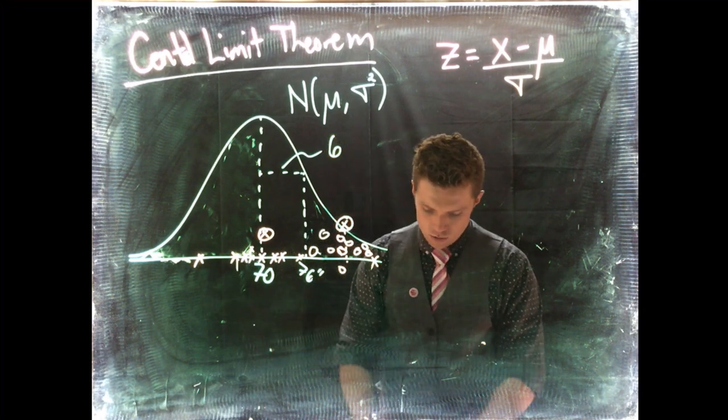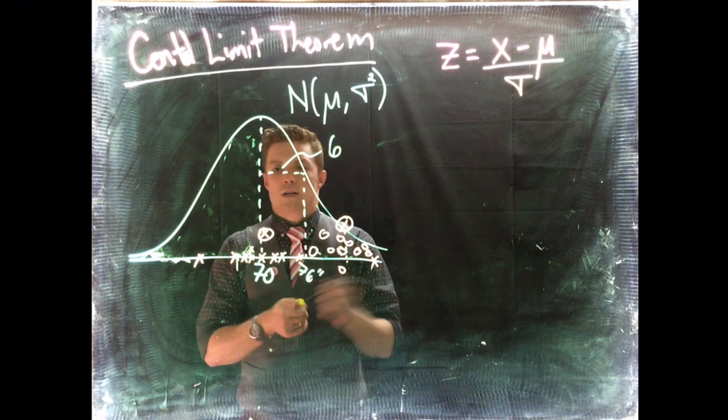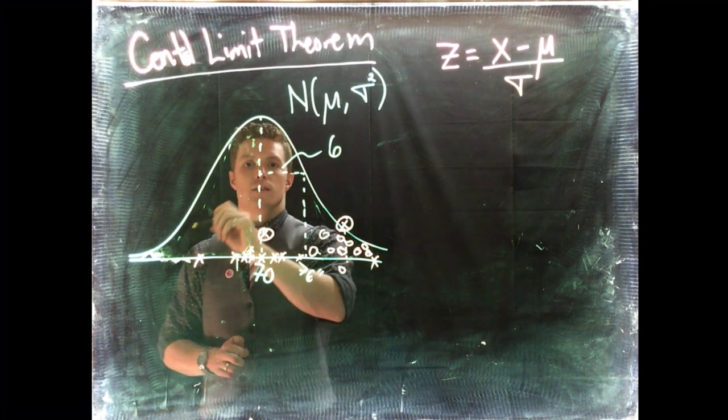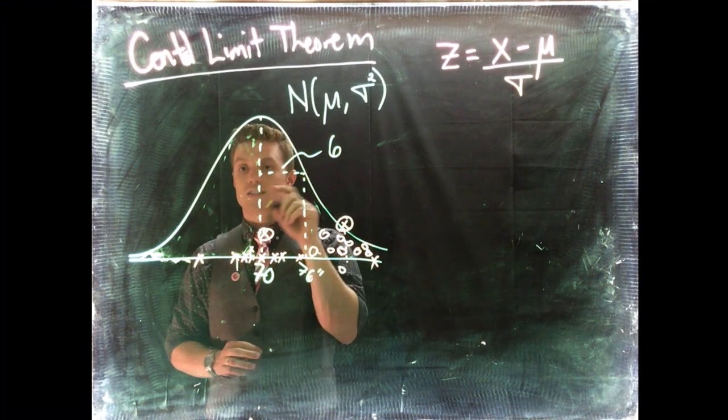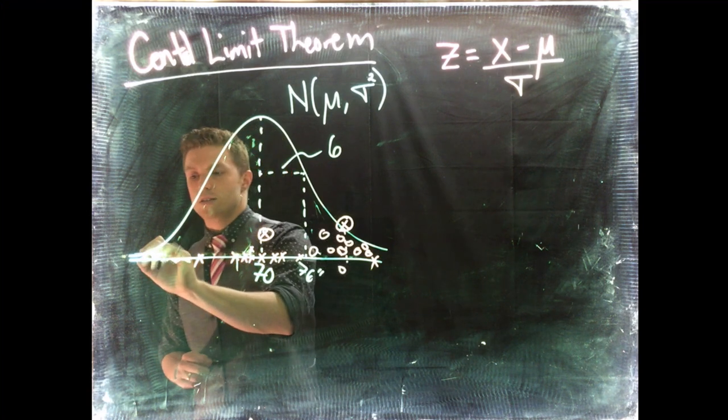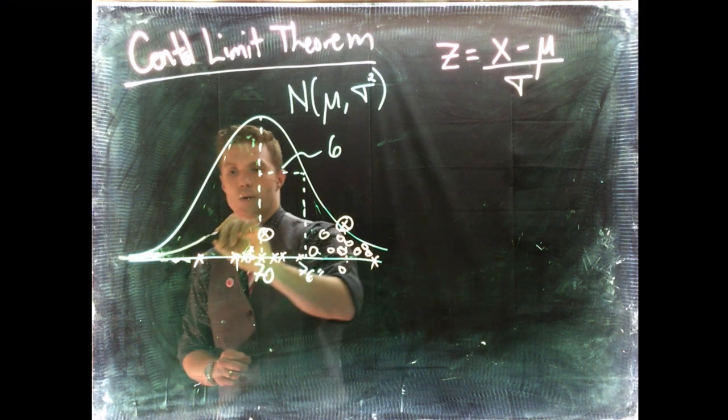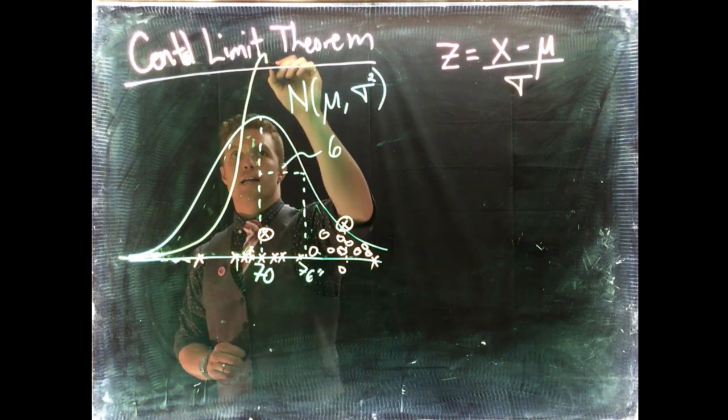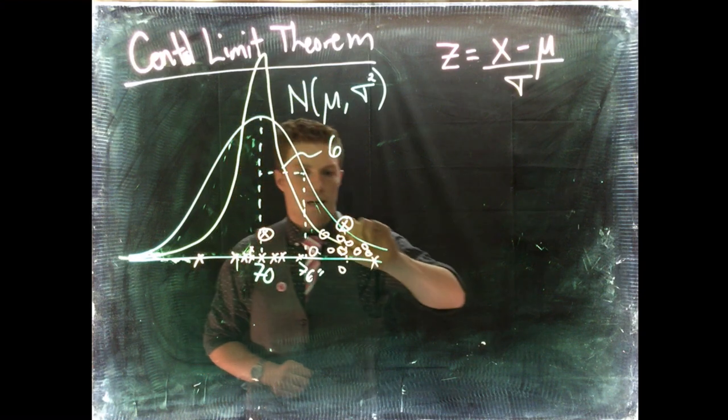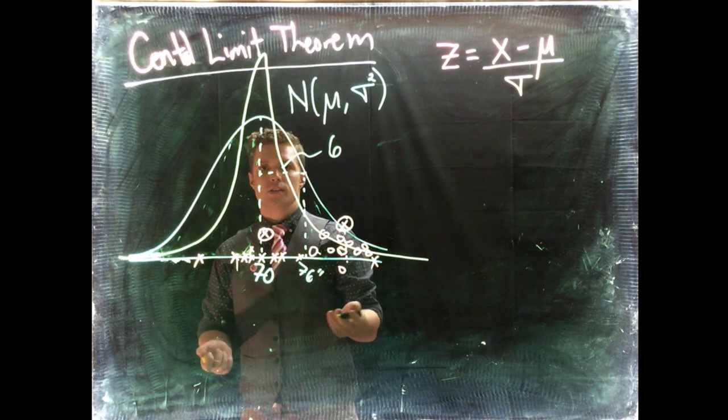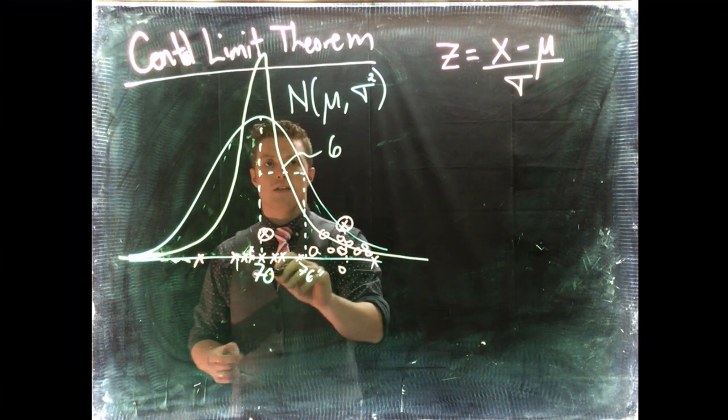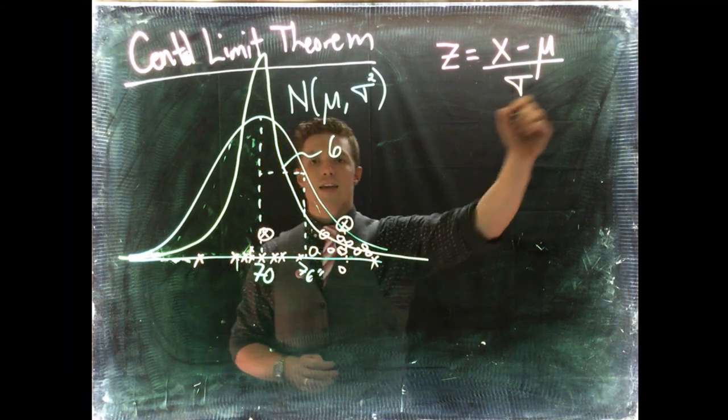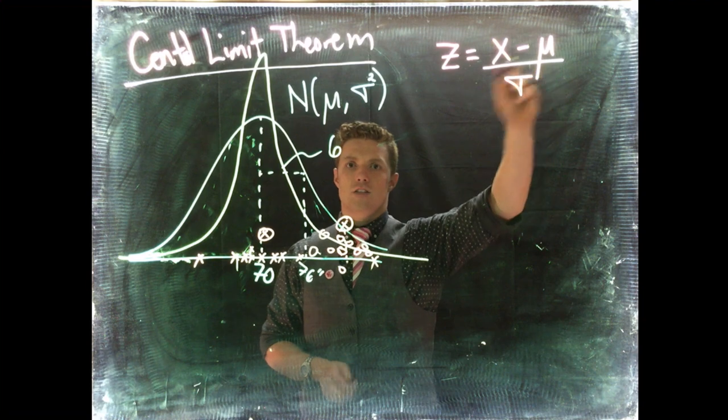What I'm going to do now is say the distribution of the sample mean is instead going to look something like this where it is tighter and then it comes back down. So the big difference here is the means are the same but the standard deviation changes when we talk about a sample size.